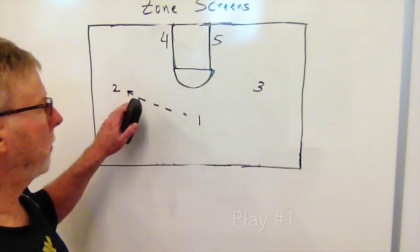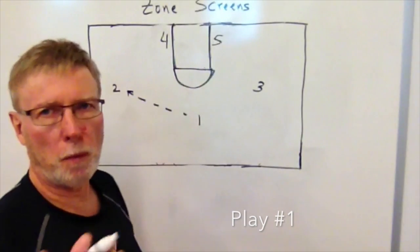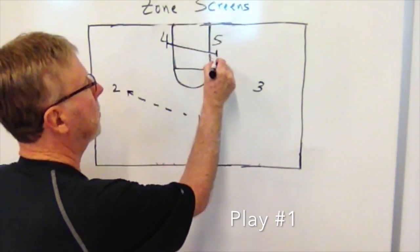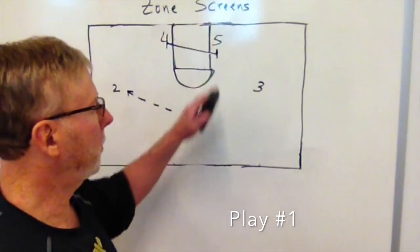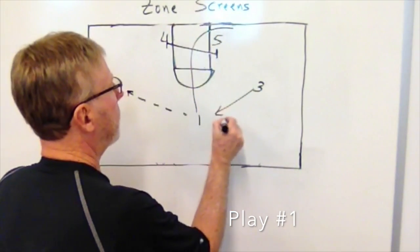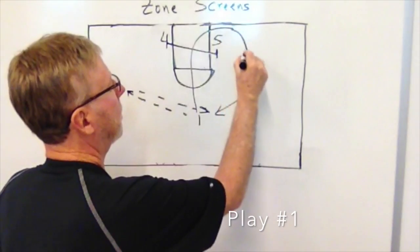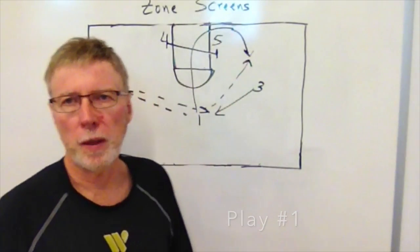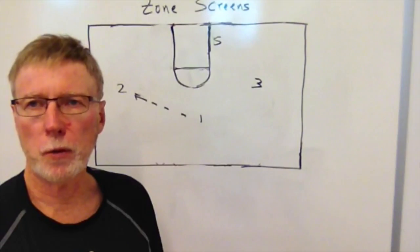On play number one — this is a pre-call — the one man delivers the ball to the two. This man cuts and sets a low block screen along with the five man, then cuts down. The three man breaks across and we continue with the pass as shown. That's play number one.